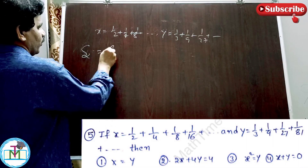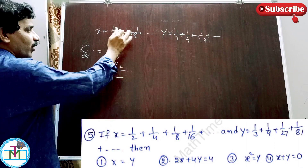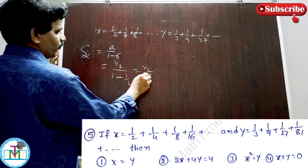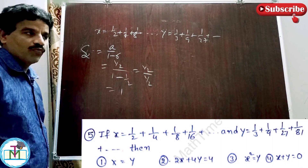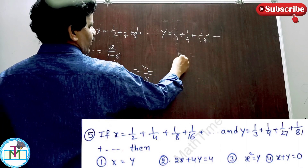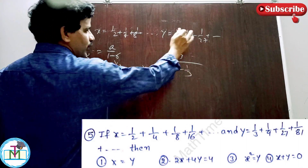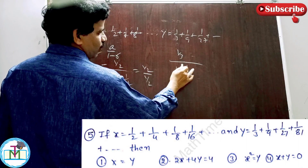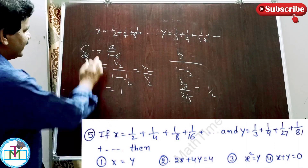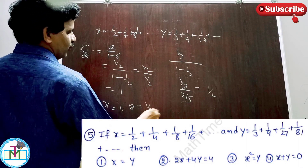The formula for the sum of infinite terms of a GP is S infinity equals a by (1 minus r). For x: a equals 1/2, common ratio r equals (1/4)/(1/2) equals 1/2, so x equals (1/2) divided by (1 minus 1/2) equals (1/2)/(1/2) equals 1. For y: a equals 1/3, r equals (1/9)/(1/3) equals 1/3, so y equals (1/3) divided by (2/3) equals 1/2.